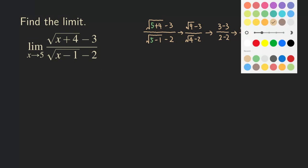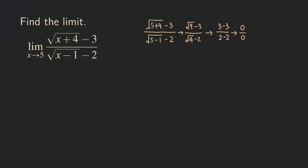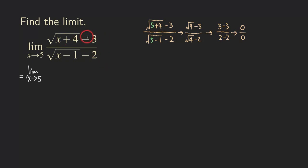So let's try that here. We are going to start the problem by multiplying the top and the bottom by the conjugate of either the top or the bottom — it's up to you. It doesn't matter which one you do first. So let's try to multiply by the conjugate of the numerator first.